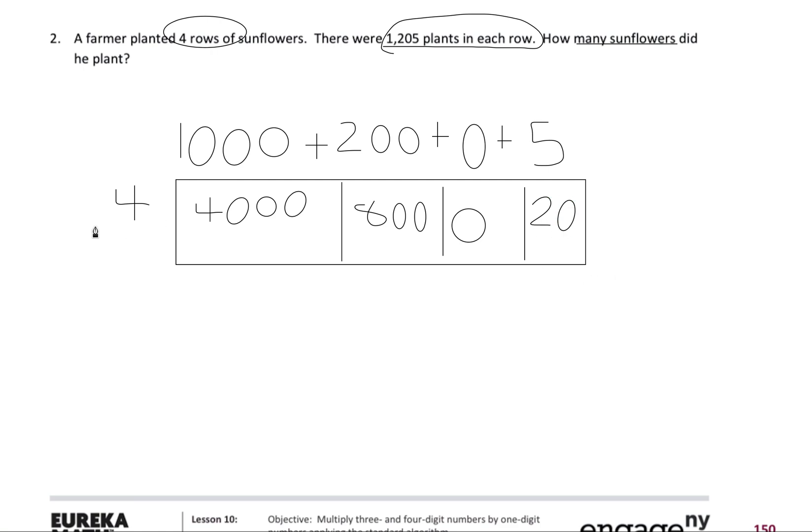So now that I have each number multiplied, my next step is to add up all of those numbers. So I'm going to be adding my four thousand, my eight hundred, my zero, and my twenty. I'm going to make sure that those numbers are all nicely lined up by place value.